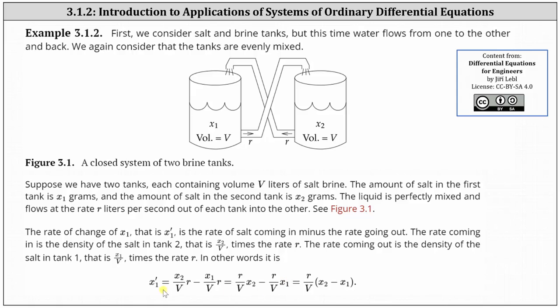Factoring out r divided by V, we have x1 prime equals r divided by V times the difference of x2 and x1.